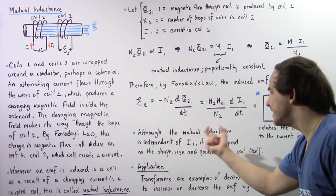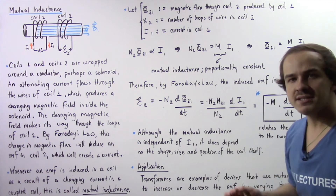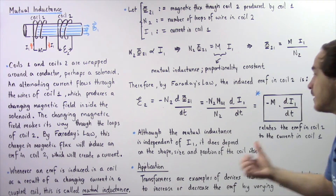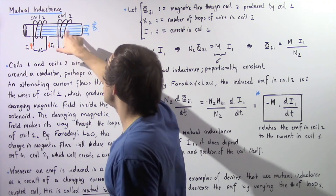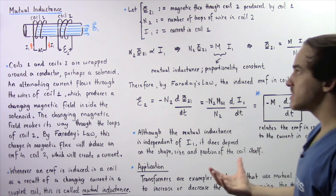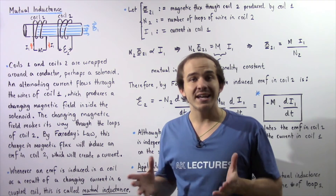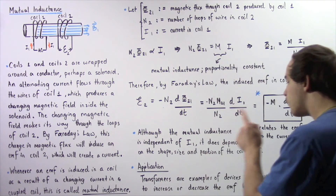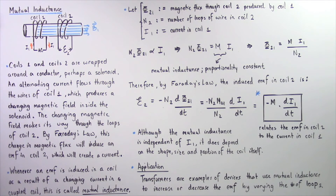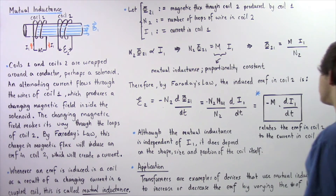Notice that although mutual inductance M is a constant and is independent of I-1, it does depend on things like the shape, size, and position of the two coils within our solenoid. One important application of this principle of mutual inductance exists in transformers. Transformers are devices that use mutual inductance to essentially increase or decrease the EMF by varying the number of loops found inside the coils of wire.